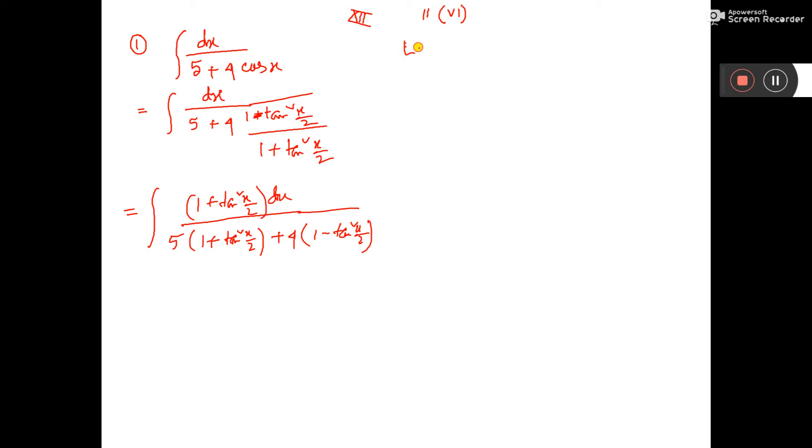Now you consider let tan x by 2 is equal to z, then if you differentiate, sec square x by 2 dx by half, that is 2 into, into half, that is equal to dz.